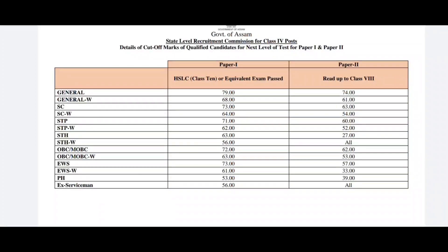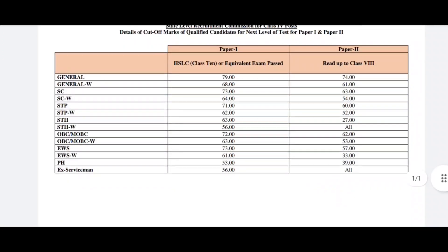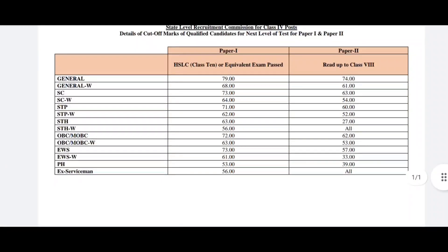For the cut-off list, paper one and paper two: General category cut-off — paper one is 79, paper two is 74. General W cut-off — paper one is 68, paper two is 61.